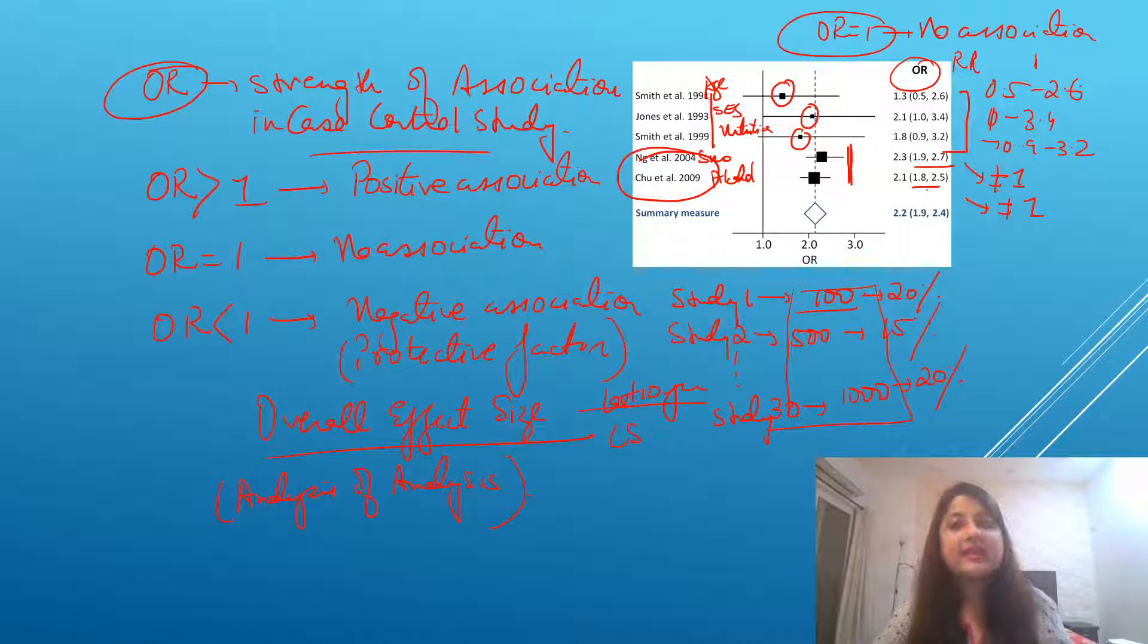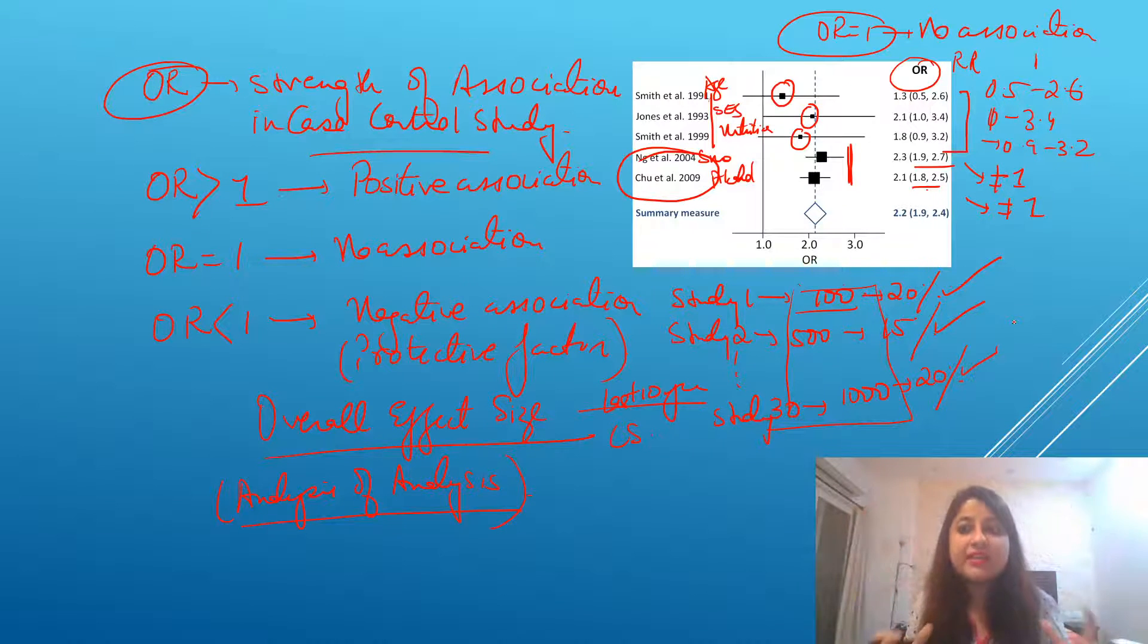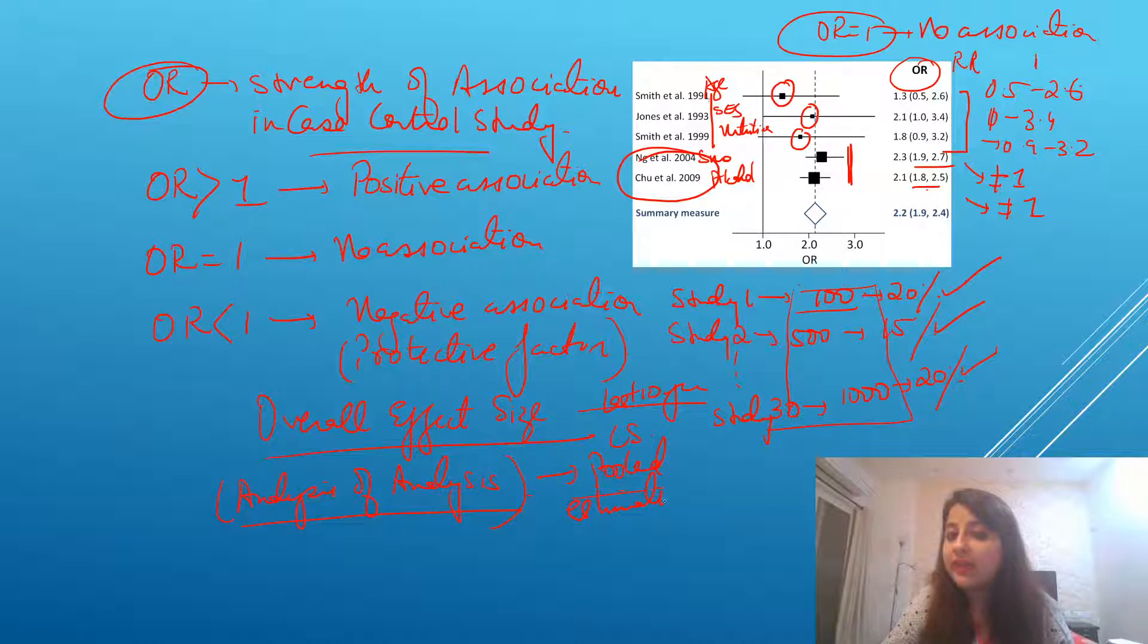In meta-analysis, you go one step further. You provide an analysis of analysis. That means, all this analysis that was done in number one study, analysis in second study, similarly analysis up to 30 studies, you include them and you finally use a statistical software to provide a pooled estimate of depression.